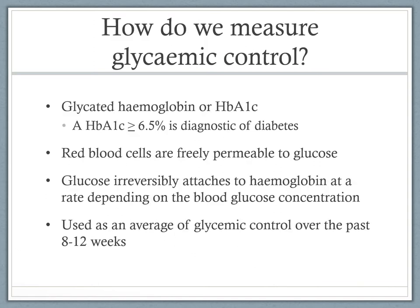How do we measure glycemic control? HbA1c is one of the most widely used measurements, also called glycated hemoglobin. A HbA1c greater than or equal to 6.5% is diagnostic of diabetes. We derive the HbA1c from the fact that red blood cells are freely permeable to glucose. Glucose enters the cell and irreversibly attaches to hemoglobin at a rate dependent on the blood glucose concentration. The higher the blood glucose concentration, the higher the HbA1c, and it's used as an average of glycemic control over the past 8 to 12 weeks.